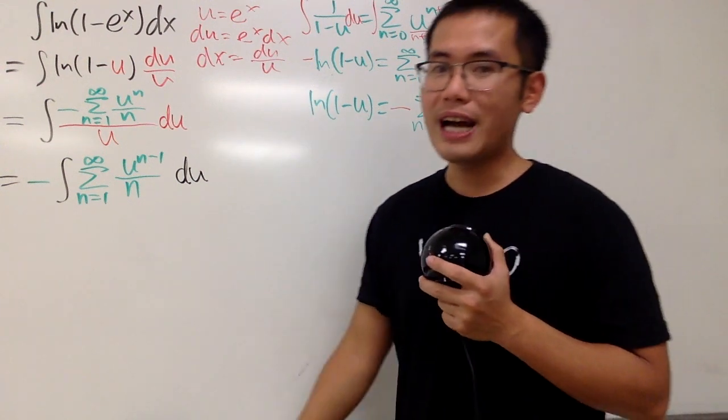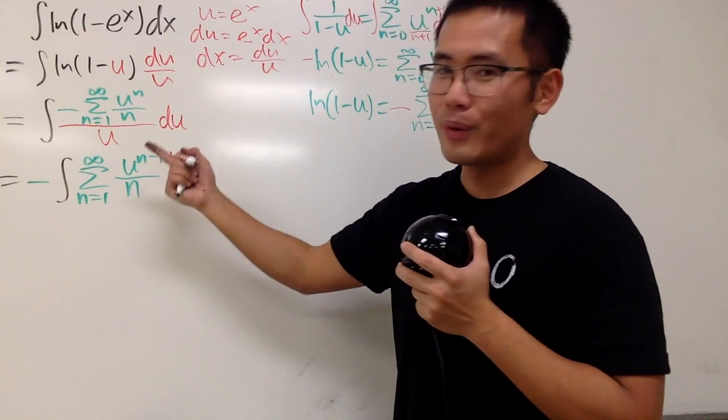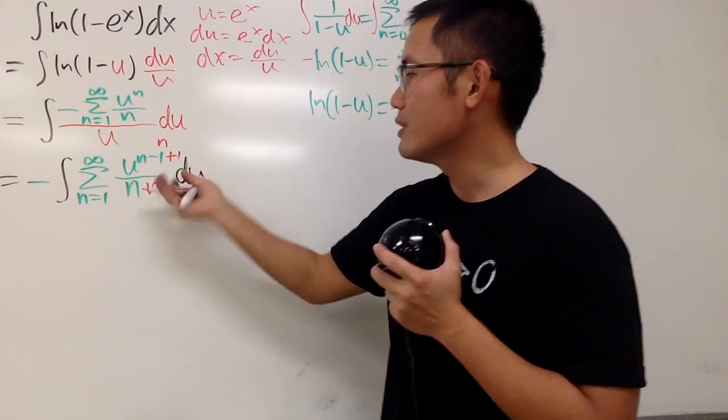Very nice. And how can we integrate that? Well, as always, just go ahead and add 1 to the power. And the new power right here is n divided by the new power. So, that's what we have.